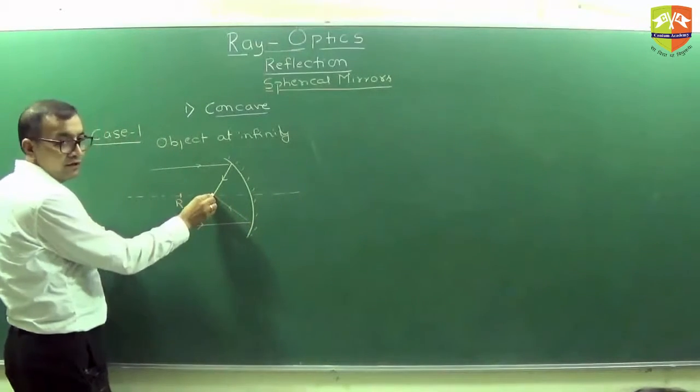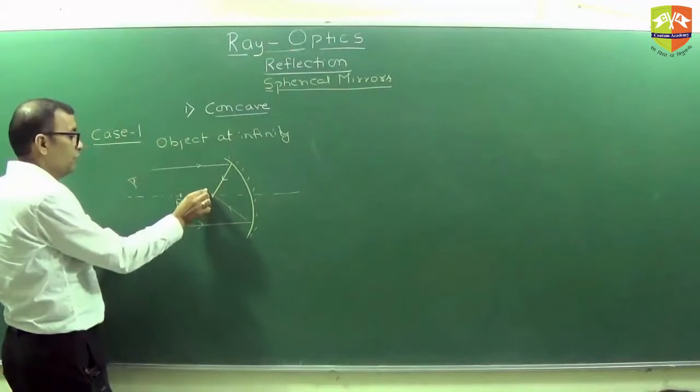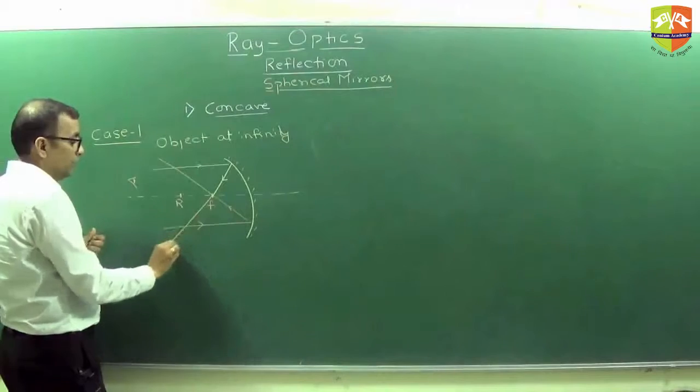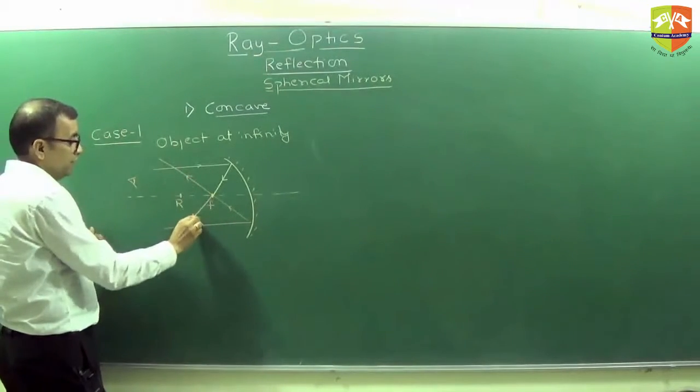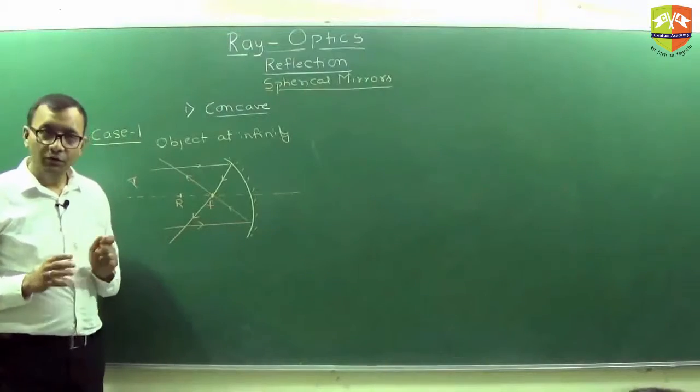So they intersect here. If a person is here watching it, one ray will go like this, other ray will go like this. So these two rays will appear to meet at the focus, so image will be at the focus.